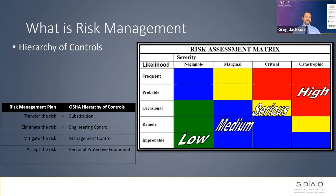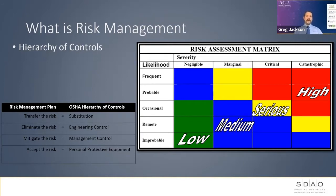When we talk about risk tolerance, it's how much risk the district is willing to accept. For example, if you have confined spaces and are thinking about entering those, you might use the risk assessment matrix and look at the severity — negligible, marginal, critical, or catastrophic — and then the likelihood: frequent, probable, occasional, remote, or improbable. For confined space, the severity could be critical or catastrophic, and we'd probably enter occasionally or probably. So the risk matrix would say this is either a serious or high risk hazard.